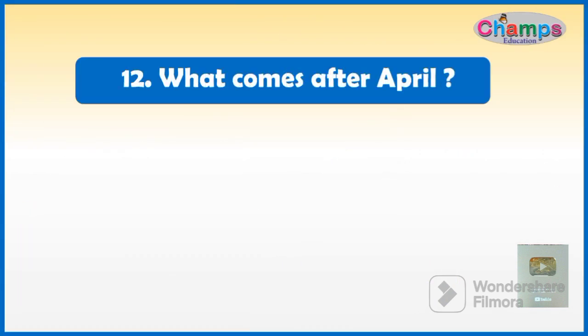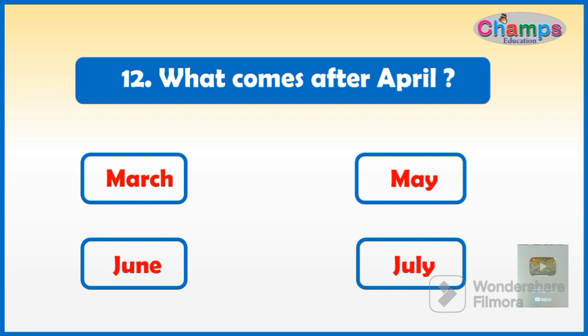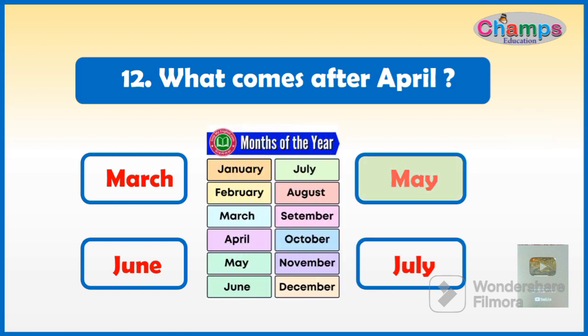What comes after April? Options: March, May, June, or July. And your time starts now. The correct option is May.